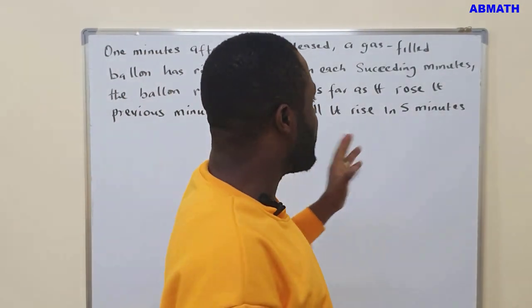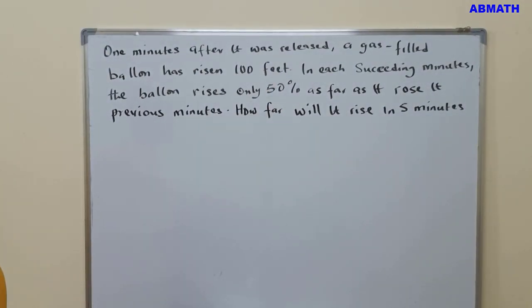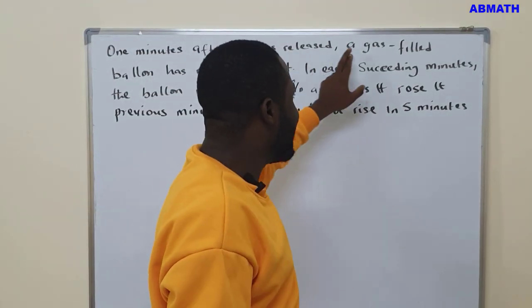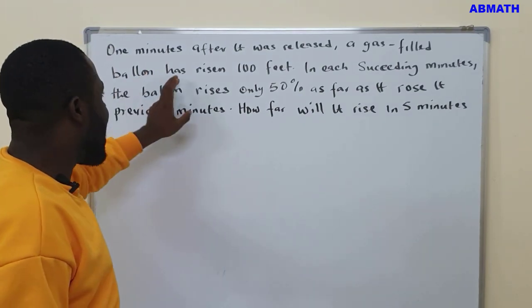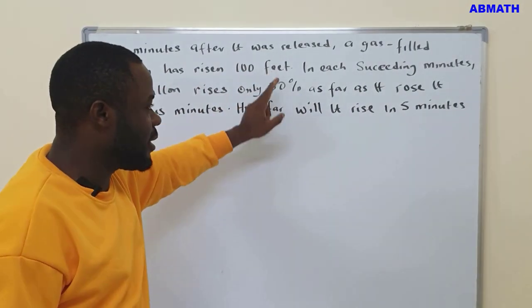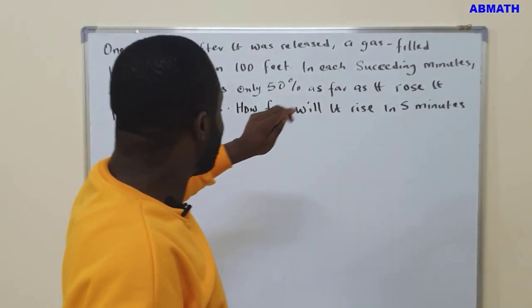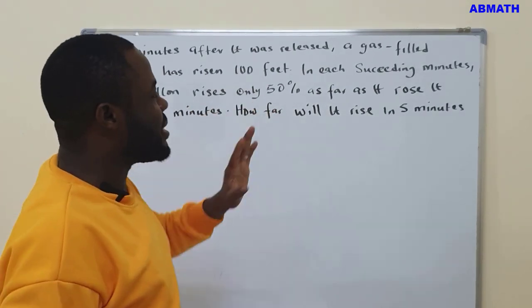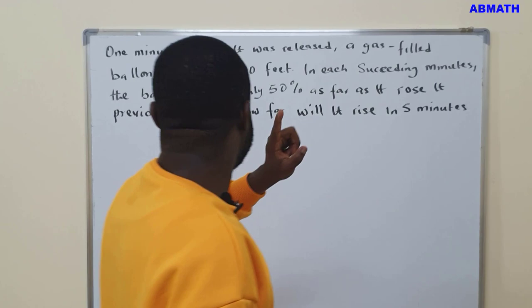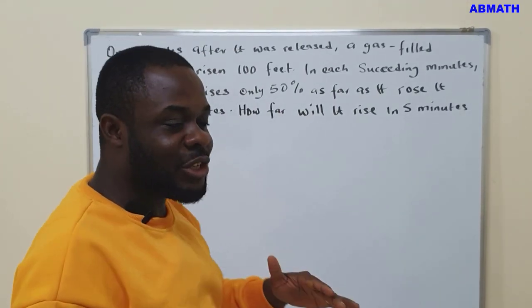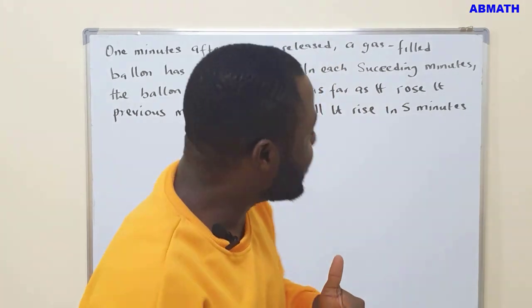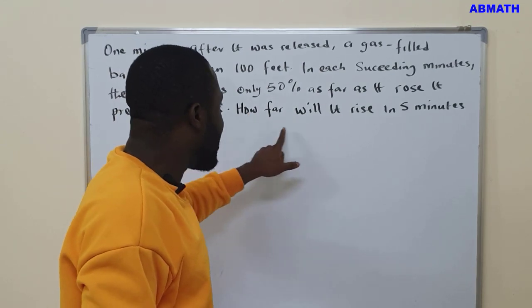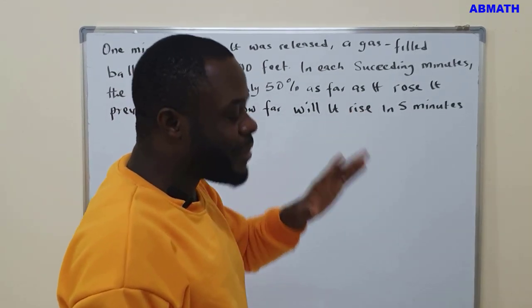Now, we have this problem. It's a word problem and it reads as follows: One minute after it was released, a gas-filled balloon has risen 100 feet. In each succeeding minute, the balloon rises only 50% as far as it rose in previous minutes. So that means it rises every 50% of the previous rise. Now, how far will it rise in five minutes?